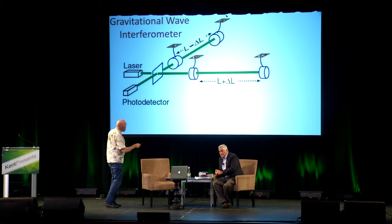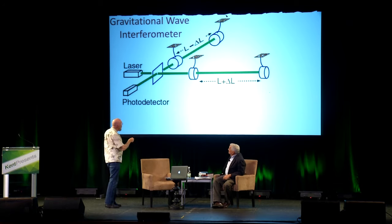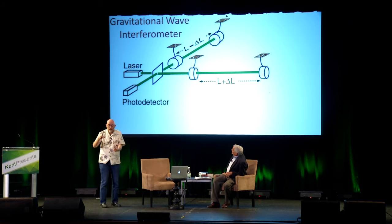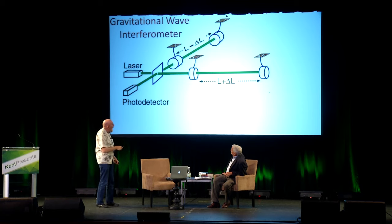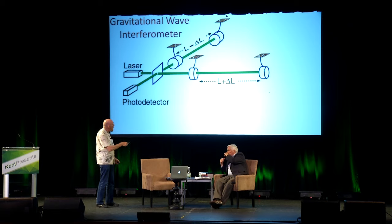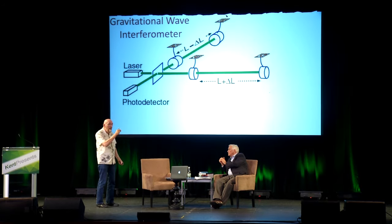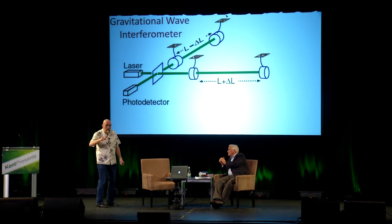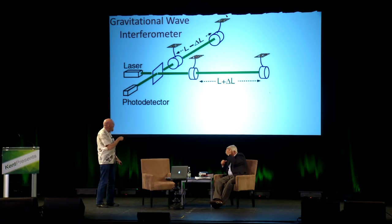You have four mirrors hanging from overhead supports. Each of these mirrors is about this size — it weighs 40 kilograms, about 100 pounds. When the gravitational wave comes along, it stretches and squeezes space, so these mirrors are pushed apart while those are pushed together, because they're riding on space. Then through the next half cycle of oscillation of the waves, these are pushed together and those are pushed apart. We use the laser beams to monitor that motion.